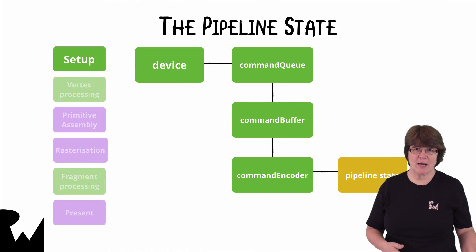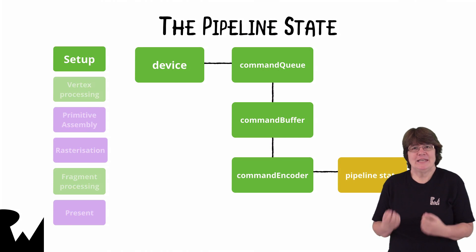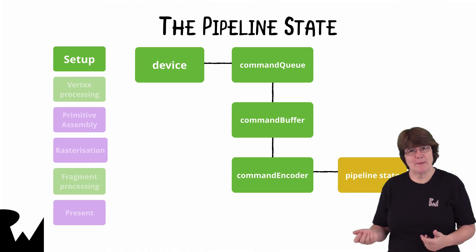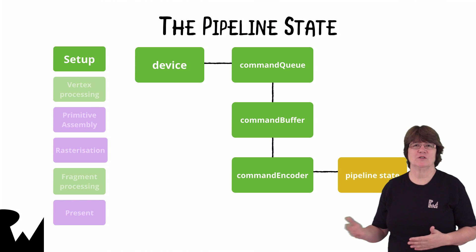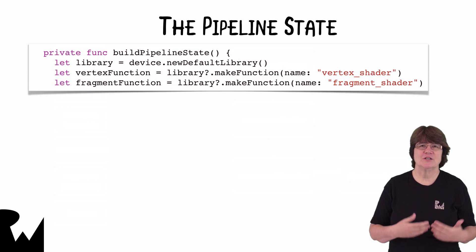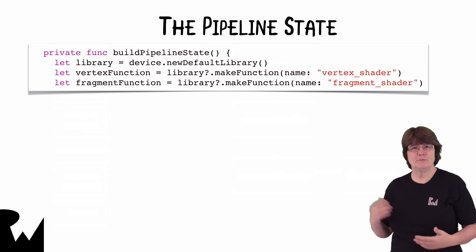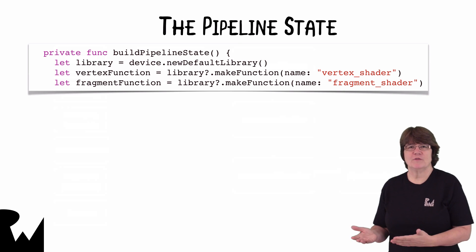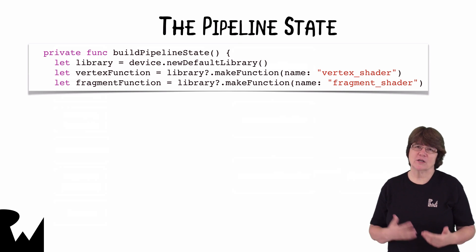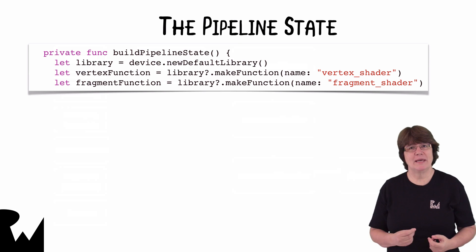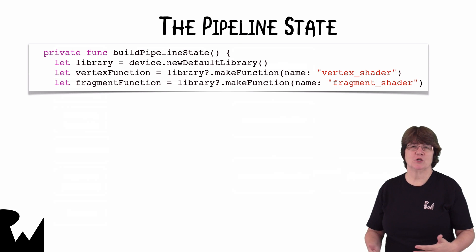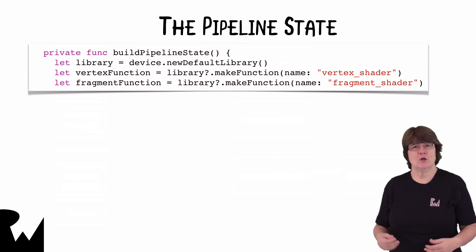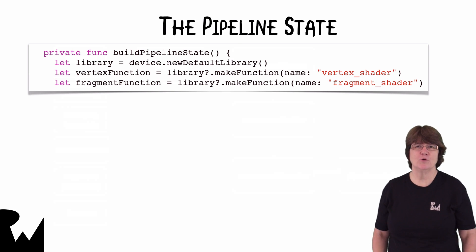We've already had a look at setting up the pipeline state for the GPU, and for each GPU command in the command encoder we set a particular pipeline state. This pipeline state tells the GPU what vertex and fragment functions to use. We created this pipeline state in the buildPipelineState method. In this method we create a new metal library with device.newDefaultLibrary. We then specify what functions should be in that library. We created these functions in a file called shader.metal using metal shading language. When we compile the project, Xcode compiles these .metal files into a special default library file.